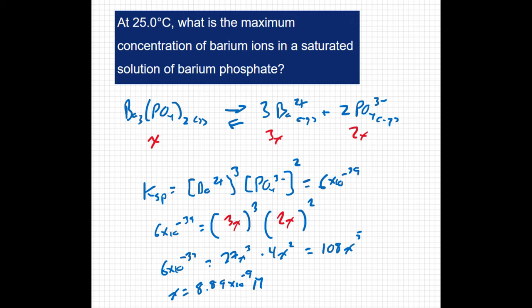But X is representing the barium phosphate. The question is asking for the barium. So 3X is going to equal 2.7 times 10 to the negative 8 molar. So that's going to be my concentration of barium ions, which is a shockingly small concentration.